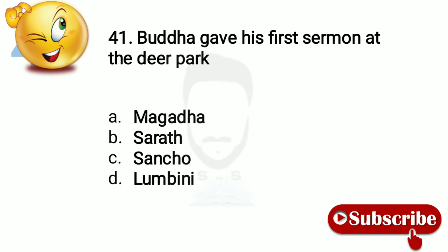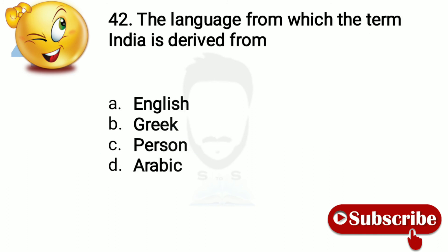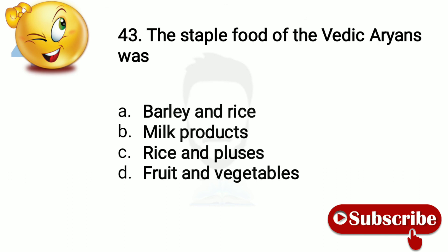Question 40: Buddha gave his first sermon at the Deer Park — Sarnath. Question 41: The language from which the term India is derived — Greek. Question 42: The staple food of Vedic Aryans was — option number B, milk products.